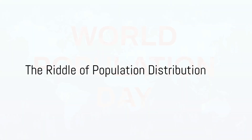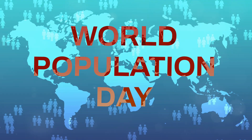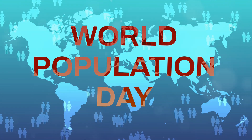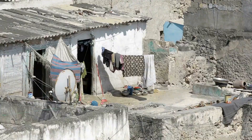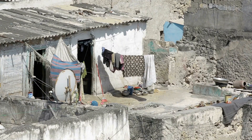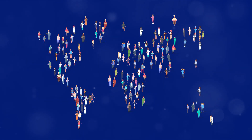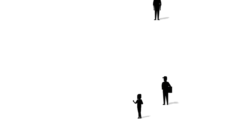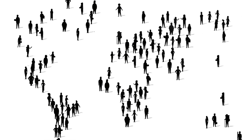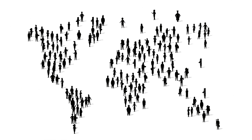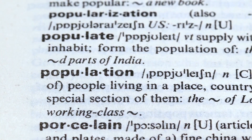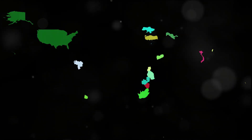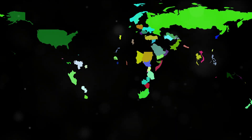Ever wonder why 90% of the world's population lives in the Northern Hemisphere? It's a question that's as fascinating as it is complex, leading us into the intricate riddle of global population distribution. This isn't just about people living here or there — it's about the patterns we humans create on this vast global canvas. Patterns that reveal much about our history, our cultures, and our adaptability. Population distribution is a key to understanding our world, a magnifying glass that brings into focus the social, economic, and environmental factors shaping our lives — a compass that can guide us through our shared past and into our collective future.